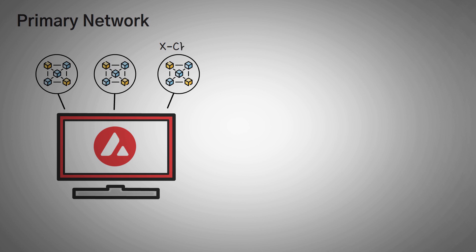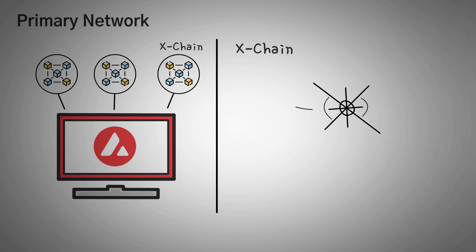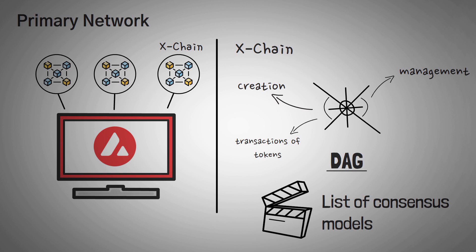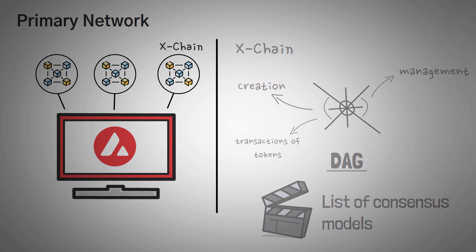The first blockchain in the network is called the X-Chain. This is the part specifically for creation, management, and transaction of tokens on the network. The engineers would tell us that, in technicality, this is actually based on a DAG, which is a unique form of a consensus model unlike a blockchain, but that is out of the scope of this video. I just thought it would be interesting to add that the Avalanche team is not married to one protocol.